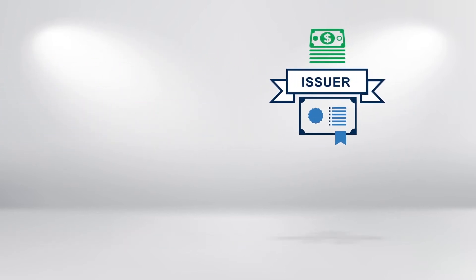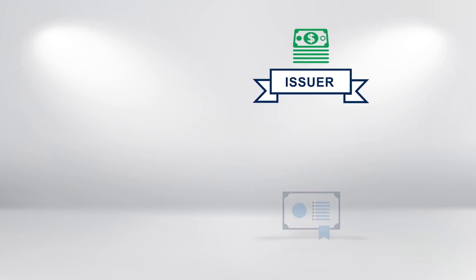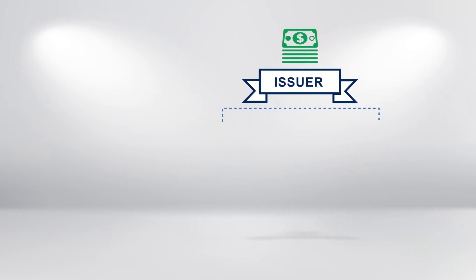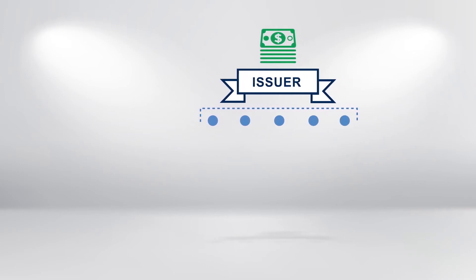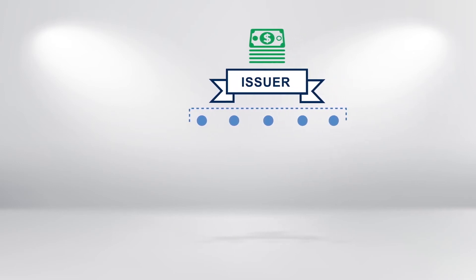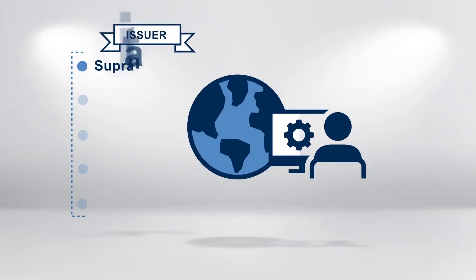So who issues them? The issuer is the entity that borrows the money by issuing a bond. Issuers are typically divided into categories that are defined by their governance structure. These are supranationals, for example the World Bank and the European Development Bank.